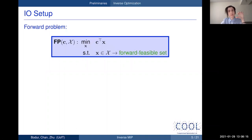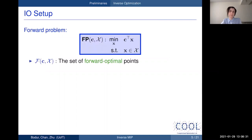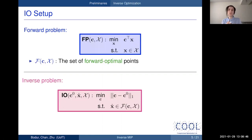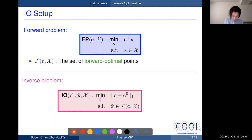There are very different general IO setups, but we focus on the most traditional one. We are given a forward optimization problem with a forward feasible set and linear objectives. There could be multiple optimal solutions — called forward optimal points — whose set we denote by calligraphic A. In the most traditional IO setting we try to infer the objective coefficient vector c. Although a few studies focus on estimating constraint parameters, the vast majority focus on estimating the cost vector.